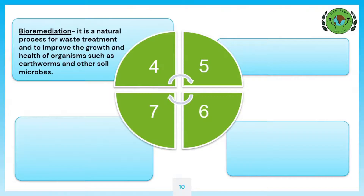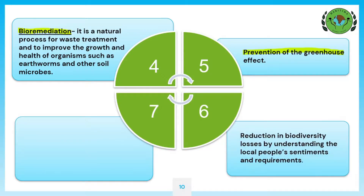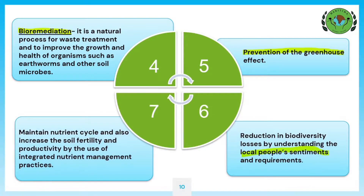Fourth is bioremediation — it is a natural process for waste treatment and to improve the growth and health of organisms such as earthworms and other soil microbes. Fifth is prevention of the greenhouse effect. Sixth is reduction in biodiversity losses by understanding local people's sentiments and requirements. Seventh, it helps to maintain the nutrient cycle and also increases soil fertility and productivity by the use of integrated nutrient management practices.